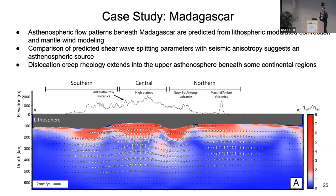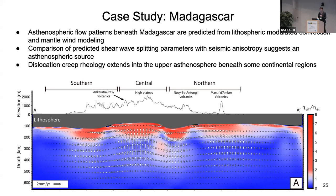By using composite rheology, we found that dislocation creep extends into the upper asthenosphere beneath continental regions, particularly in Madagascar. This map shows the ratio of dislocation creep to diffusion creep — red indicates dislocation creep dominance, blue indicates diffusion creep dominance.